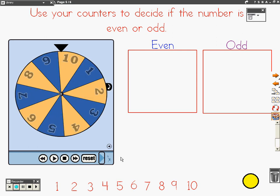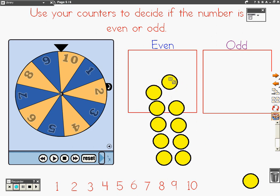The number ten. Get out ten counters and pair them up. Is that number odd or even? The number is even because each one has a partner. So ten is an even number.